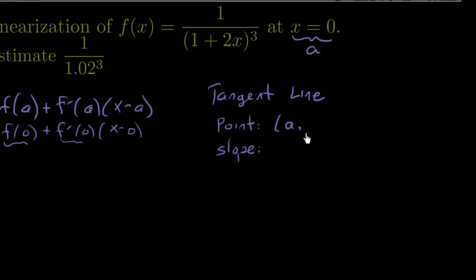Now the point, that's going to be (a, f(a)), which actually we know what that point is. That's going to be 0 comma and then whatever f(0) is. And then the slope is going to be f prime of 0.